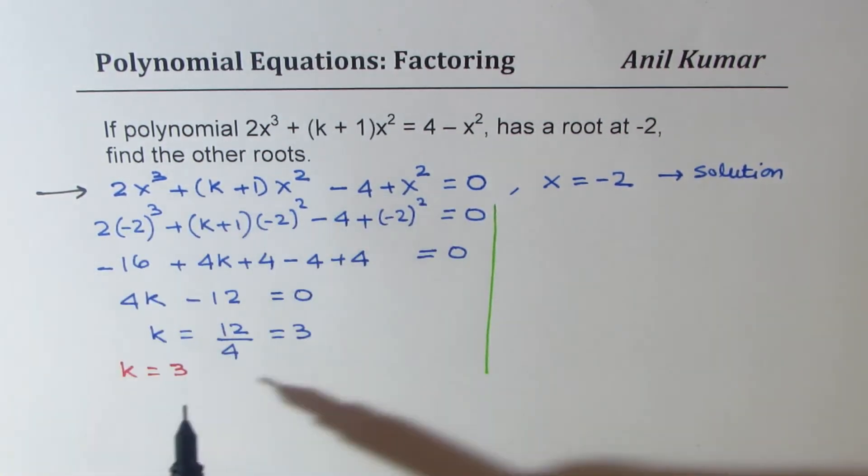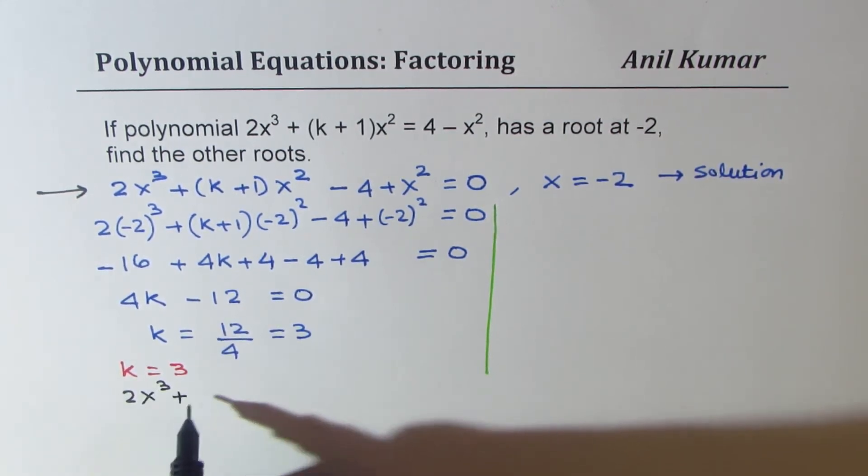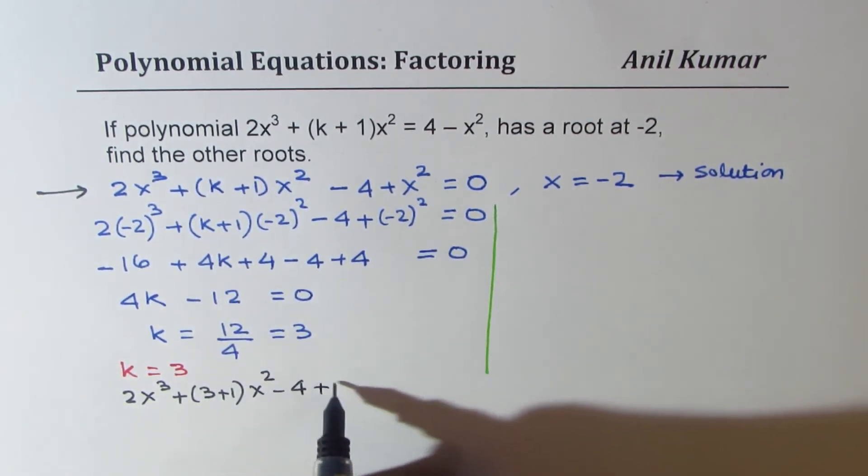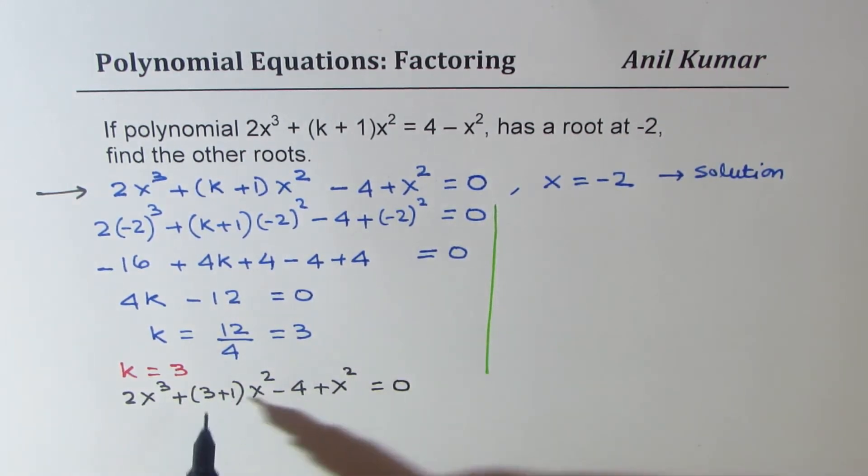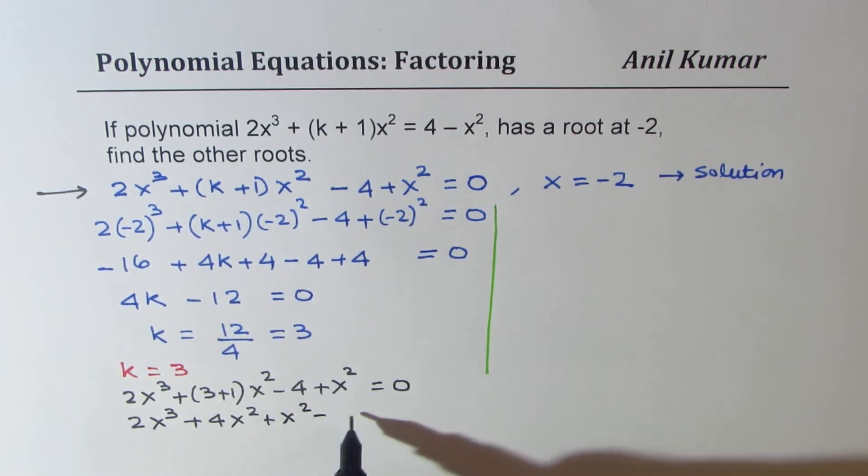And then we'll rewrite the equation. So if k equals to 3, what do I get? I get 2x³ + (3 + 1)x² - 4 + x² = 0. So this is 4. So we get 2x³ + 4x². Let me write x² first. -4 equals to 0. So that gives you the equation with the value of k as 3, 2x³ + 5x² - 4 = 0. So that becomes a cubic equation for us.